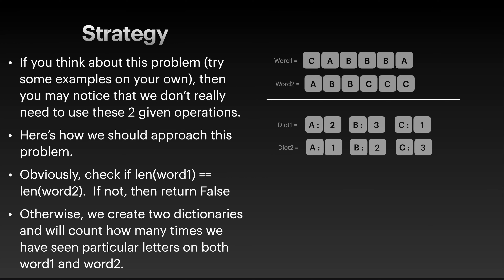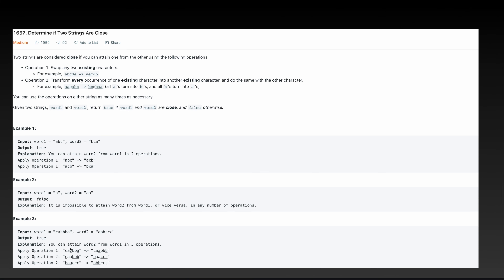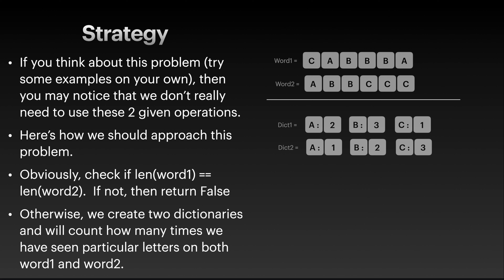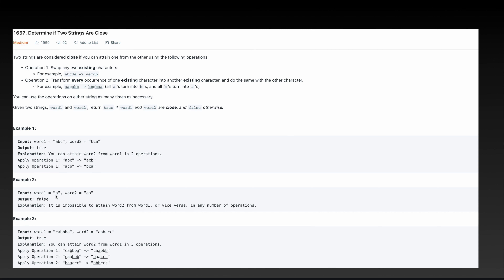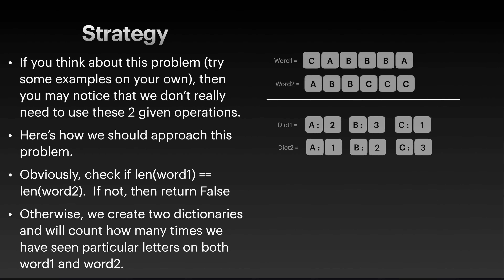Don't get discouraged if you haven't noticed the pattern yet. If you try this example in your head, you notice that you don't have to use the two operations — the existing swapping and transformation. I will talk about why later. The obvious first case is: if the length of word one and word two are not equal, we return false. For example, if word one has length one and word two has length two, there's no way to transform word one into word two, so we return false.